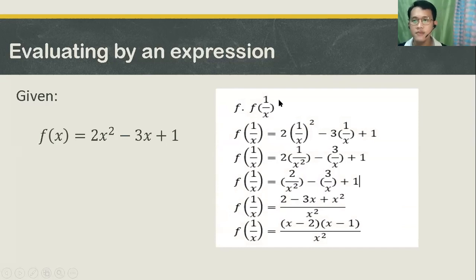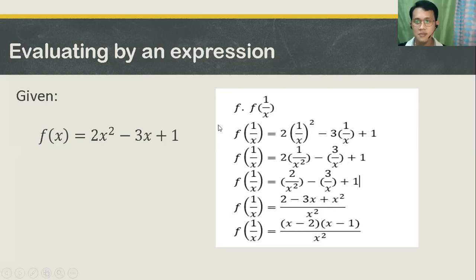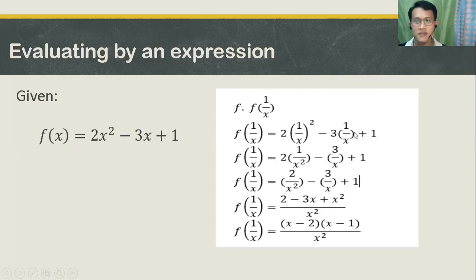Finding f of 1 over x. The same process — you need to substitute your 1 over x to your x's. The variable x will turn into 1 over x. So f of 1 over x is equal to 2 times the quantity of 1 over x, squared, minus 3 times 1 over x, plus 1. And then perform the operation.